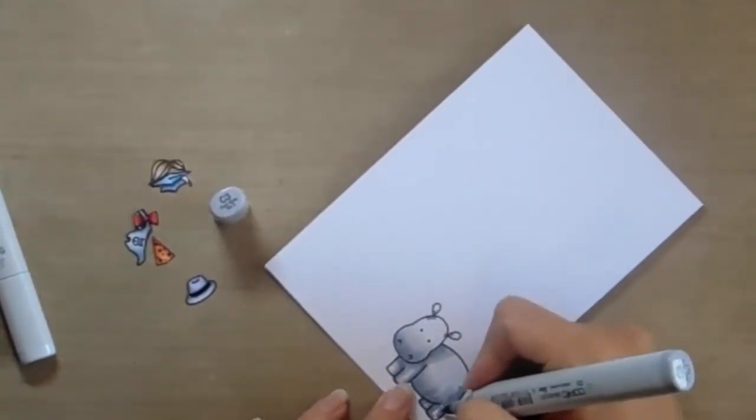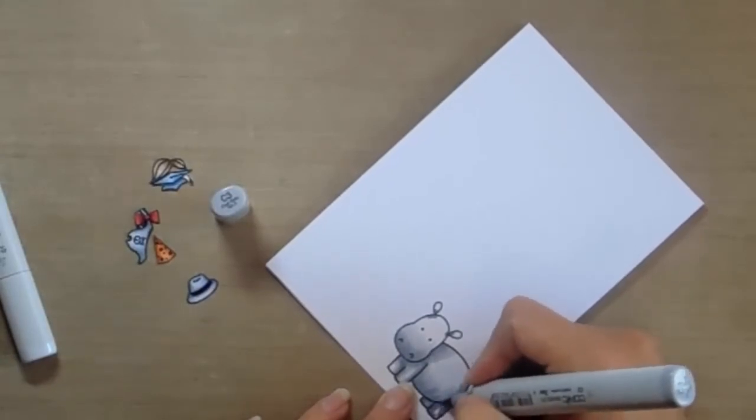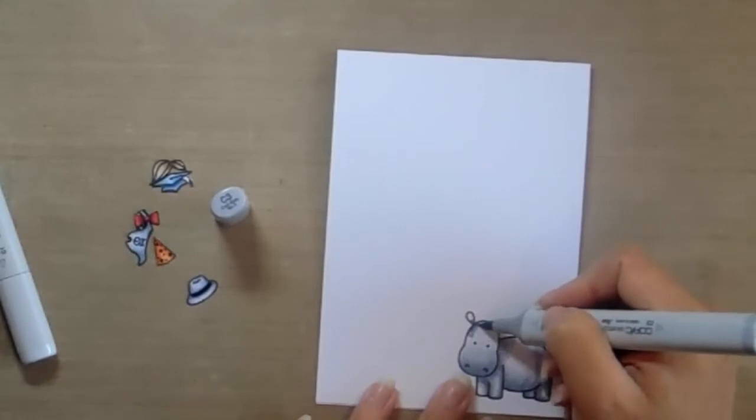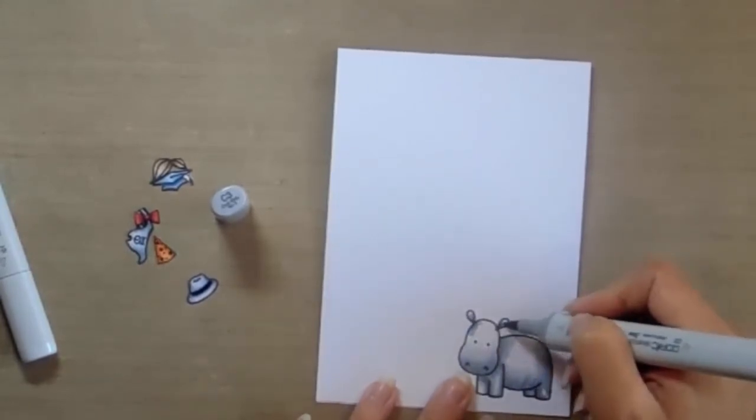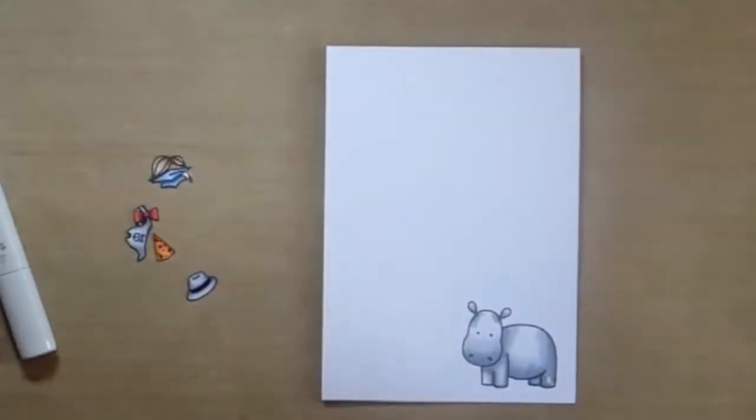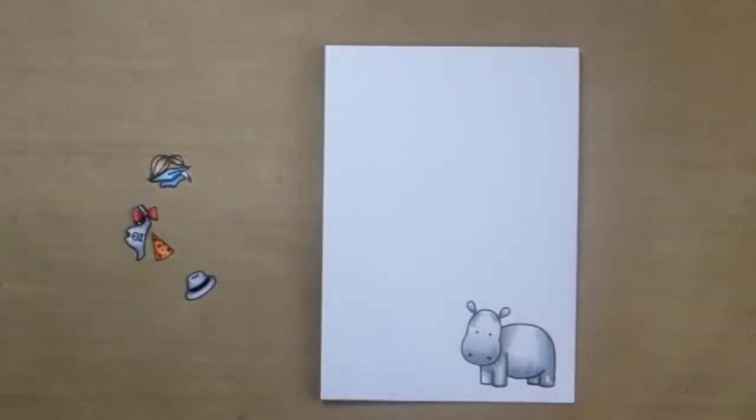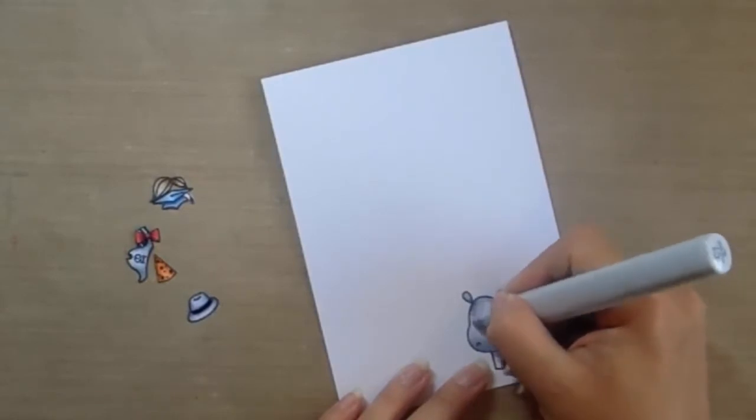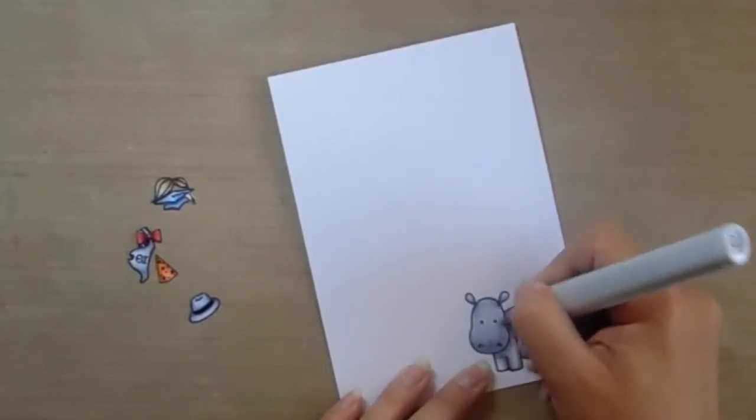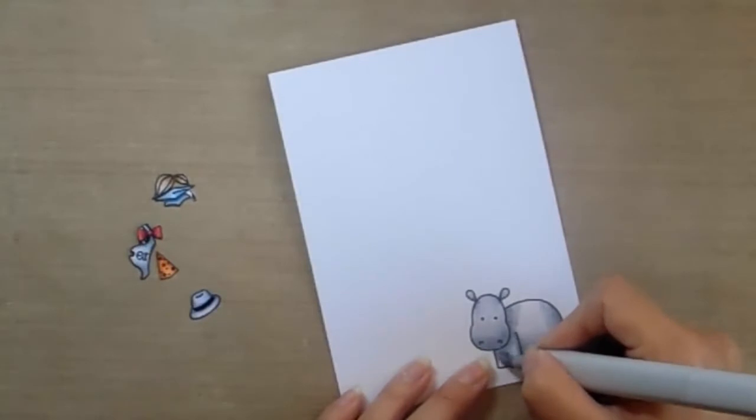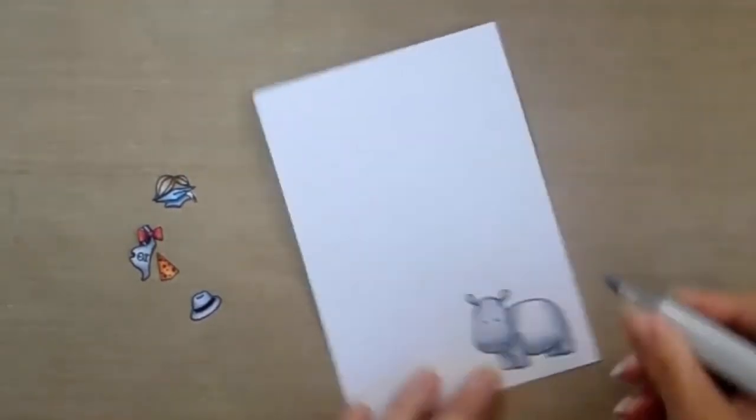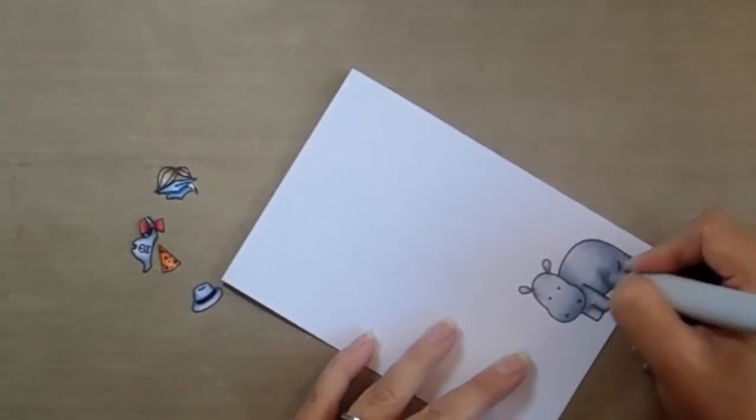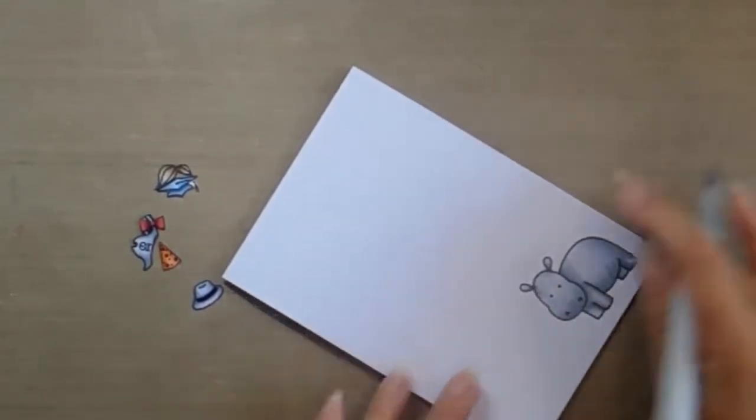This is just a simple, quick and easy way to color with Copics. You will get shading but it's probably not perfect shading of where it would be on a real life image. And then what I'm going to do is I'm just going to go over my whole image with the C1. And that will blend in.